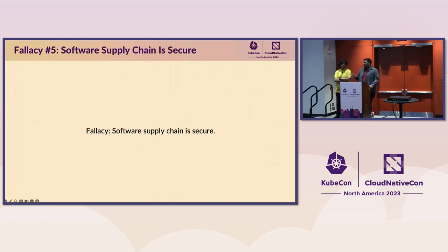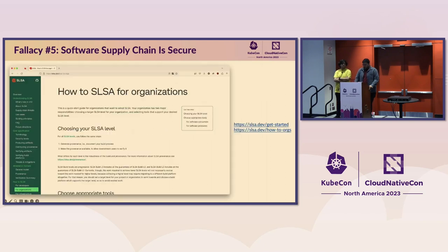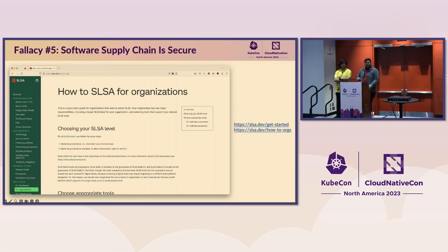The fallacy here is: the software supply chain is secure. It's not. You have to do your part to make sure the software supply chain is secure. One prominent way these days, also supported by OpenSSF, is using the SLSA framework. If you go to slsa.dev, it states certain levels of software integrity that you can follow to build your software supply chain and make it secure for your consumers and for yourself as well.